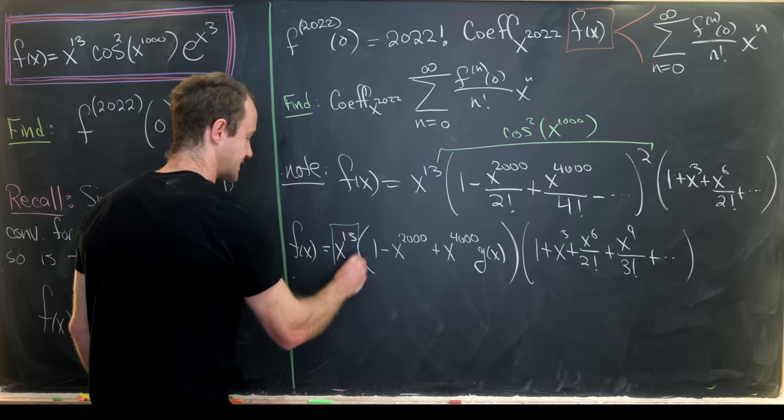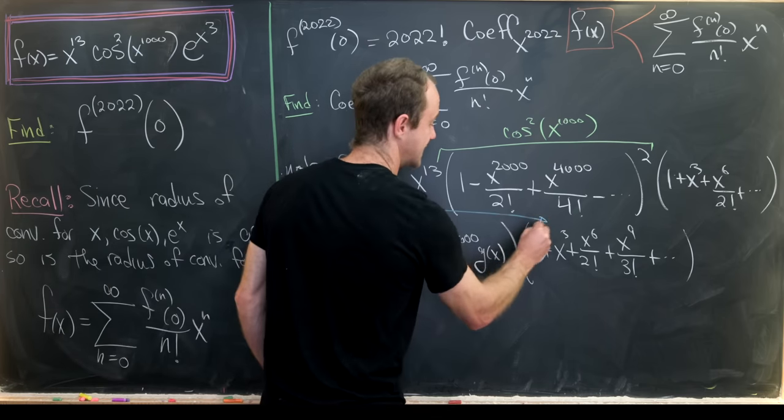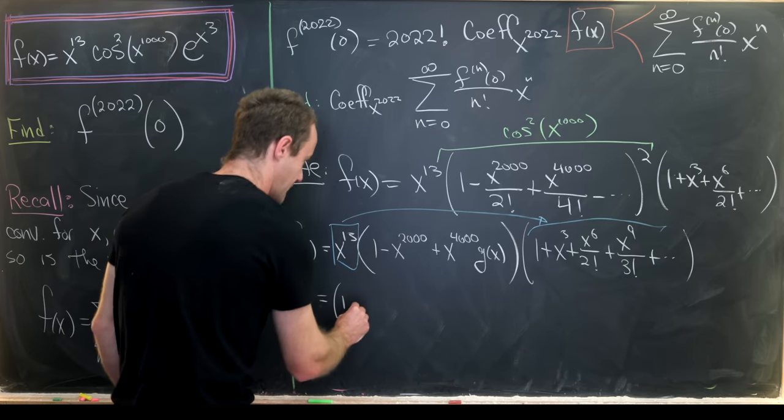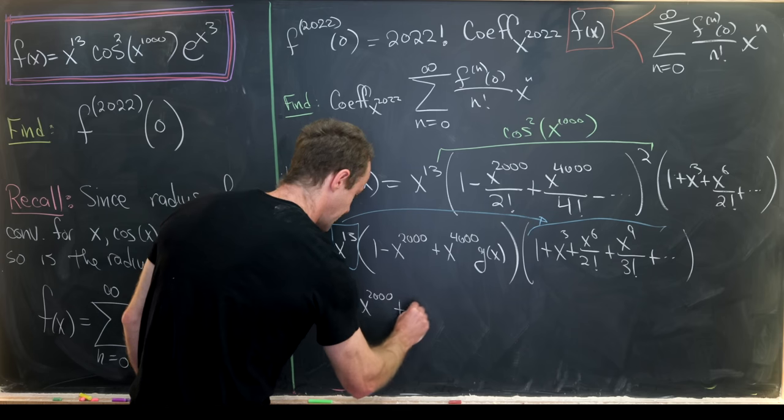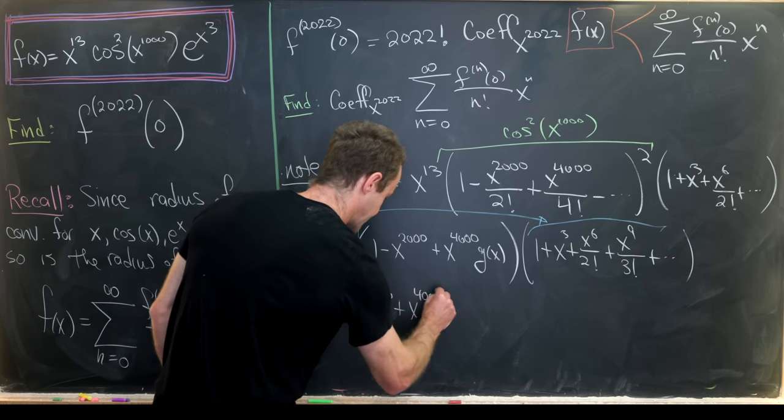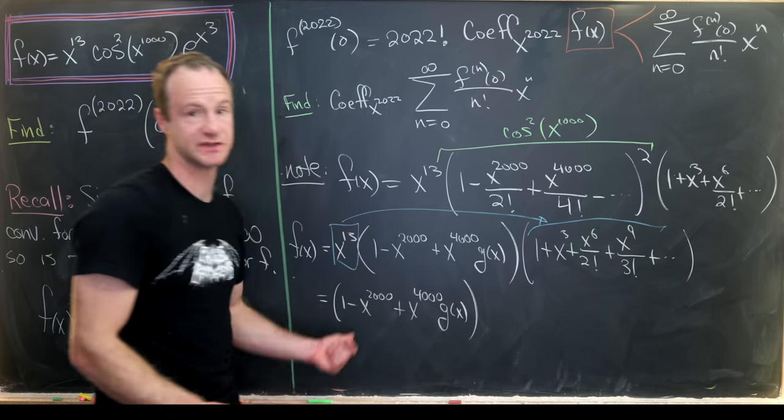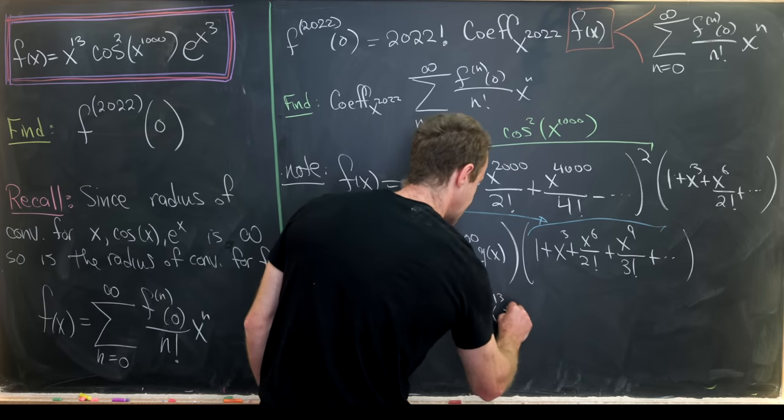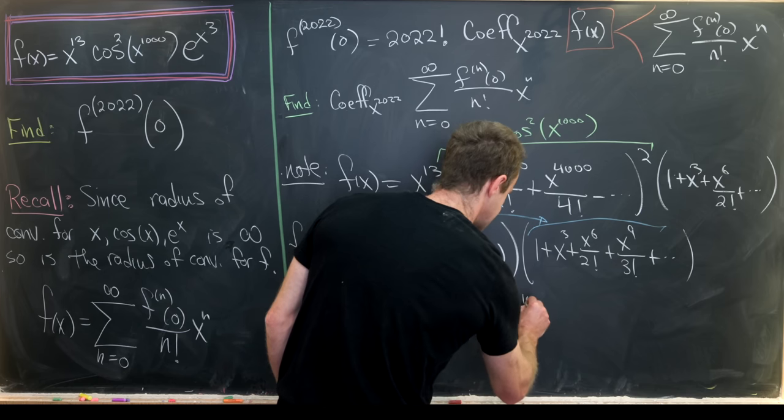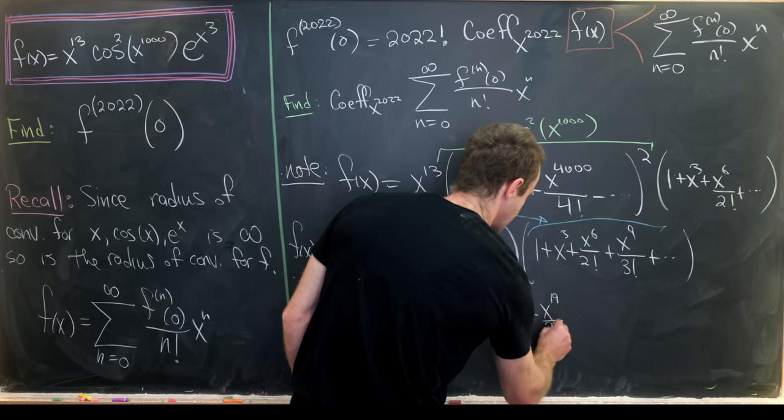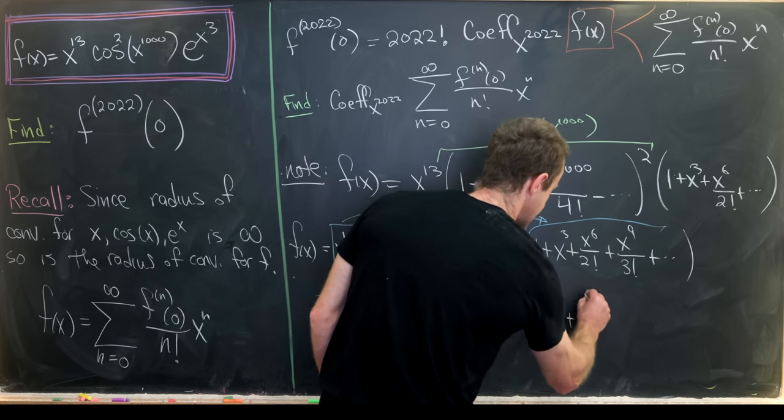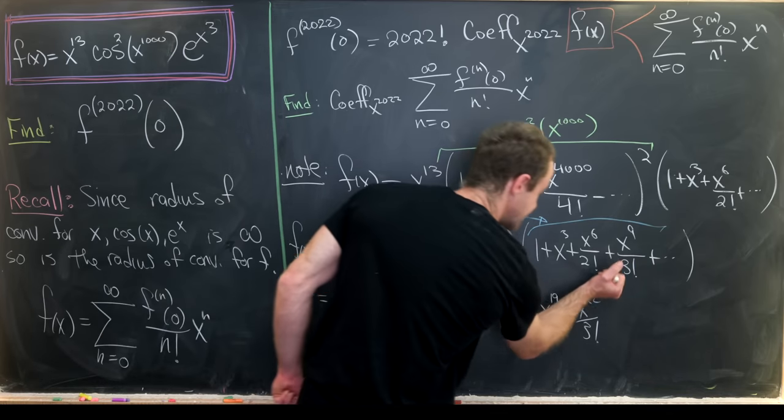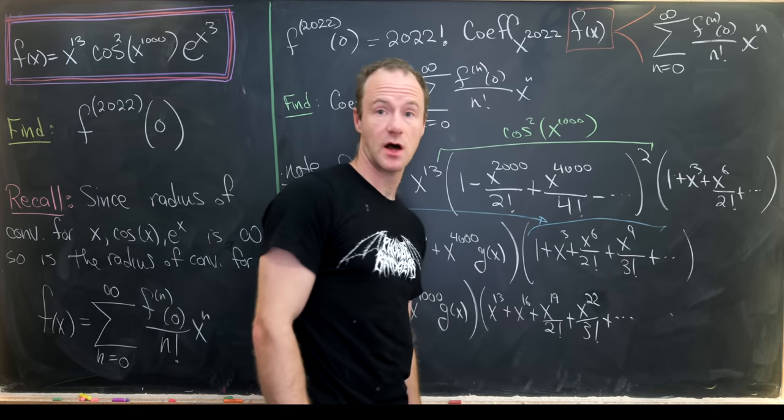And then over here I'm going to write some more terms. We have 1 plus x cubed plus x to the 6 over 2 factorial plus x to the 9 over 3 factorial plus dot dot dot. And then I'm going to do one more rewriting step before I start extracting coefficients. I'm going to take this x to the 13 and distribute it through into this sum. So that's going to leave me with 1 minus x to the 2000 plus x to the 4000 times this function that I'm calling g of x which is a power series. And then I've got x to the 13 plus x to the 16 plus x to the 19 over 2 factorial plus x to the 22 over 3 factorial.